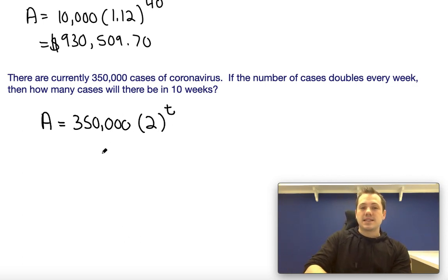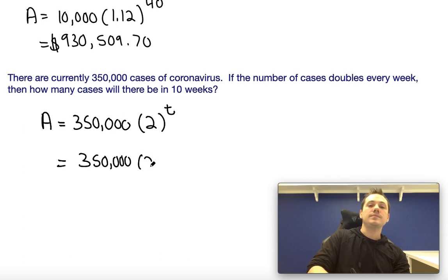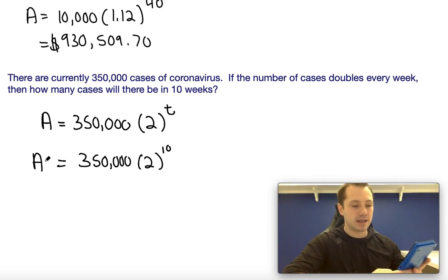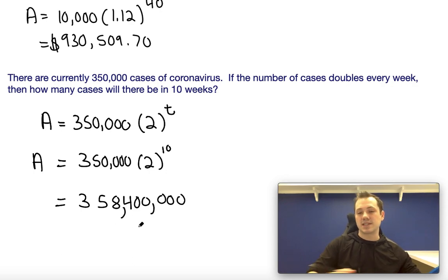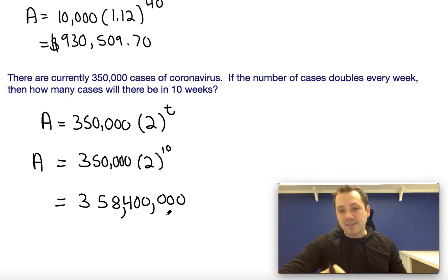Well, in 10 weeks, that just means we're going to plug in 10 for t. So A equals 350,000 times 2 to the 10th. Go ahead and plug this into a calculator right here. We find that 350,000 times 2 raised to the 10th is a very large number. I've got 358,400,000 cases of coronavirus in just 10 weeks.